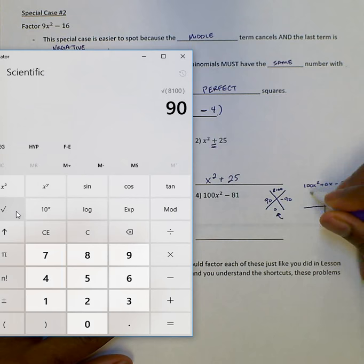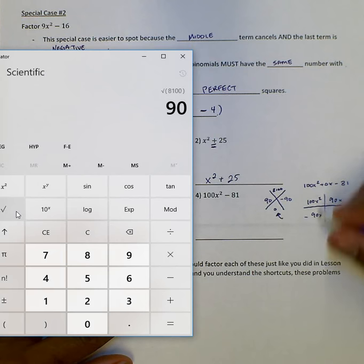And then I'd use my box method. First term in the first box, 100x squared. Last term in the last box, negative 81. And then I'd use 90x and negative 90x.